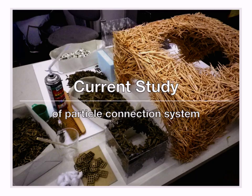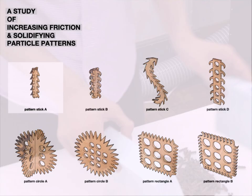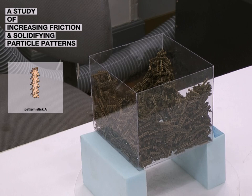As a next step, we have experiments on solidifying these formations. In this case, we designed a spiky stick using a razor cutter for increasing friction, and we pour glue into the material inside the box.